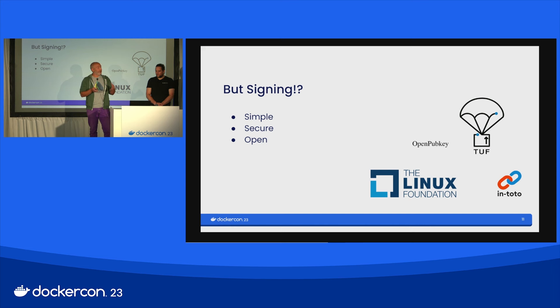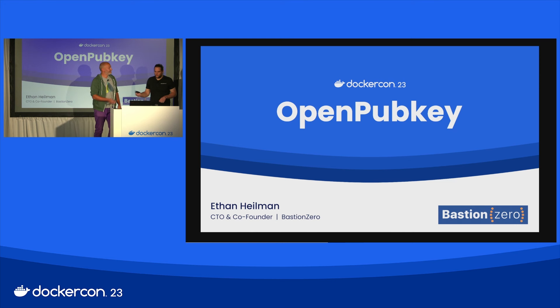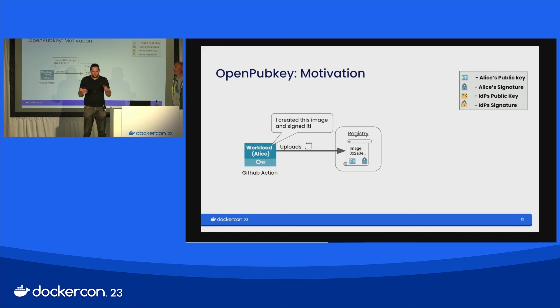With that, I'm going to hand over to Ethan, who will tell you the details of our solution. So I'm going to be talking about OpenPubKey, which is a protocol for signing objects and verifying them under identities. Before I begin, I want to explain the problem that OpenPubKey is trying to solve.